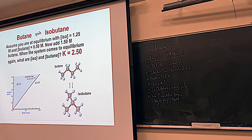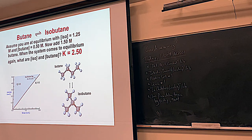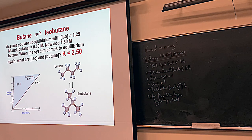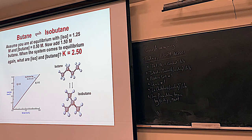We learned a lot of cool things last week. We learned about the equilibrium constant K. The equilibrium constant is always products divided by reactants. So for this reaction where butane is being turned into isobutane slash methylpropane, butane is the reactant and isobutane is the product, so K equals isobutane divided by butane. K is never zero or negative — it will always be a positive number. K greater than one means more product, while K less than one means more reactant.